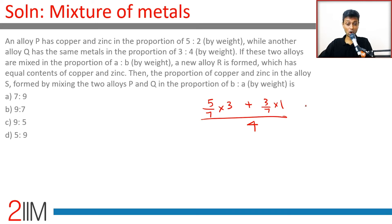This is copper we get: 5/7 times 3 is 15/7 plus 3/7 by 4 is 18/7 into 4, 9/2, this is 9/14.